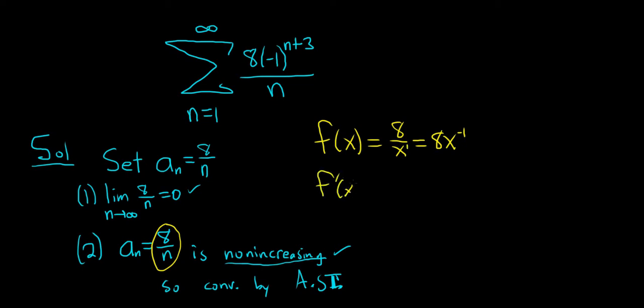And then take the derivative. So f prime of x. So you bring this down. So you get negative 8x to the negative 2. So that's the same thing as negative 8 over x squared. And that's less than 0. So f is decreasing. So f is decreasing for all real values of x. Therefore, it's decreasing for all integral values of x.